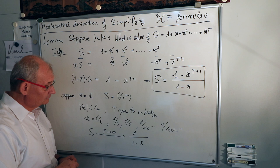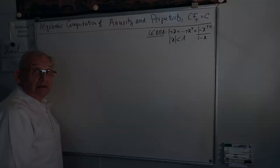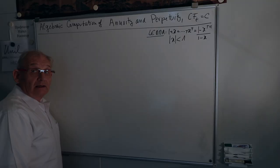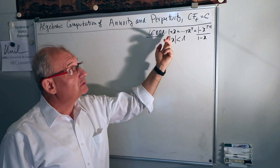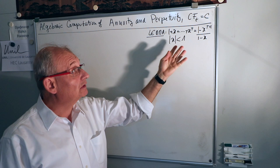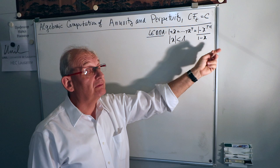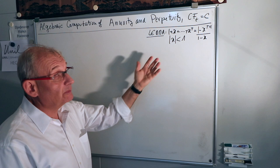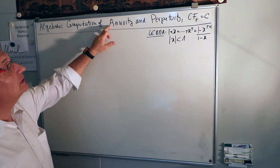Now we are going to apply this formula to different cases of growing annuities and so forth. The time has come to apply the lemma, which tells us the sum of t terms growing at rate x is (1 minus x^(t+1)) divided by (1 minus x), under the assumption that x in absolute value is smaller than 1. We apply this to the annuity, and once we have the annuity formula, we go to infinity to get the perpetuity formula, starting with the case where cash flows are constant.